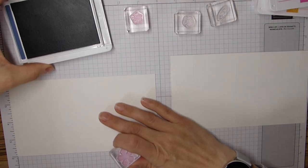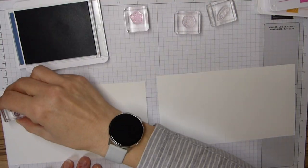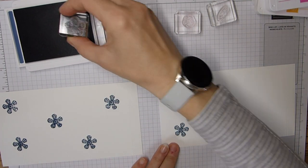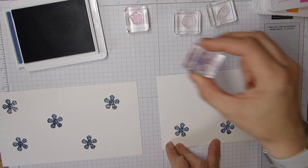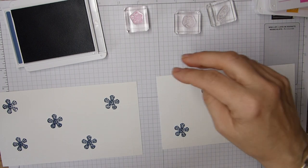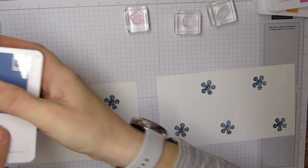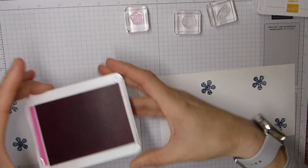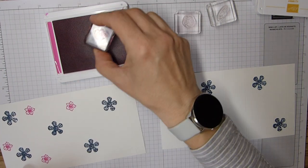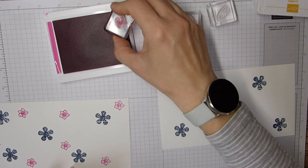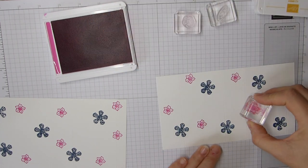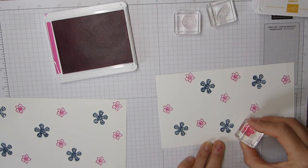I'm going to go with misty moonlight as my largest flower on this one and I'm literally just going to stamp randomly on all of these pieces of whisper white. So it's just random stamping all over, and the same on the second sheet.